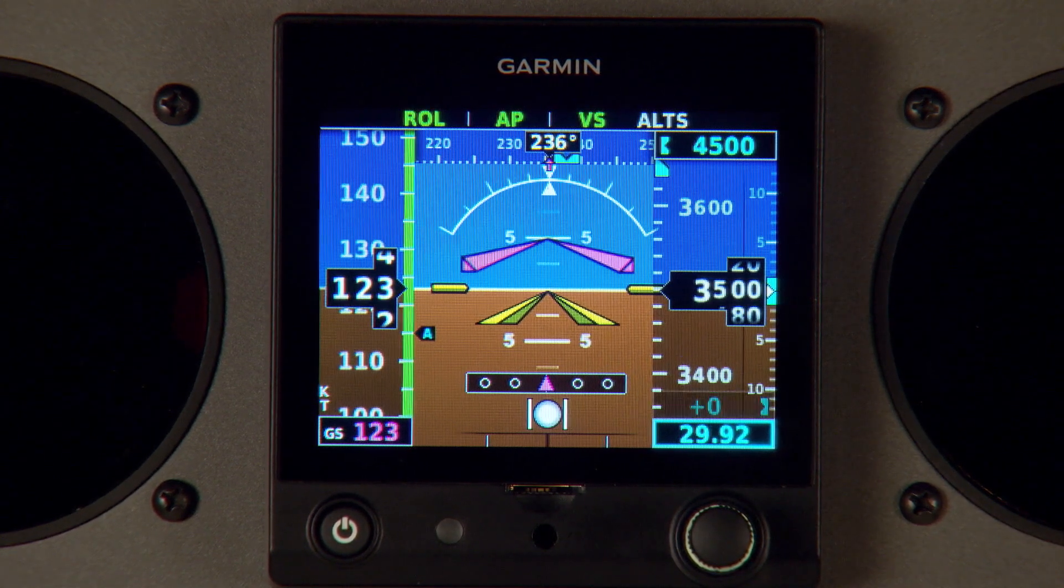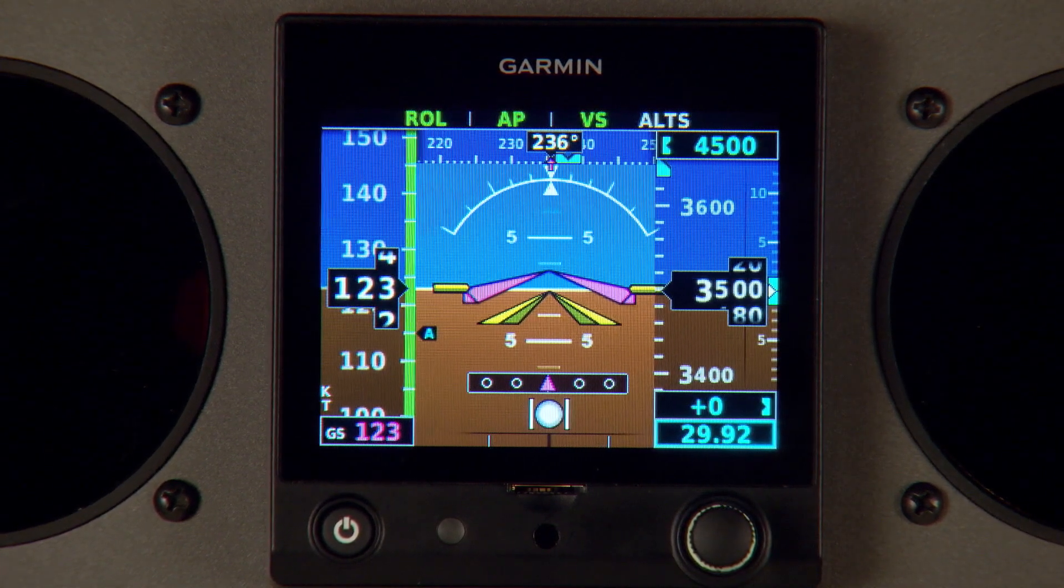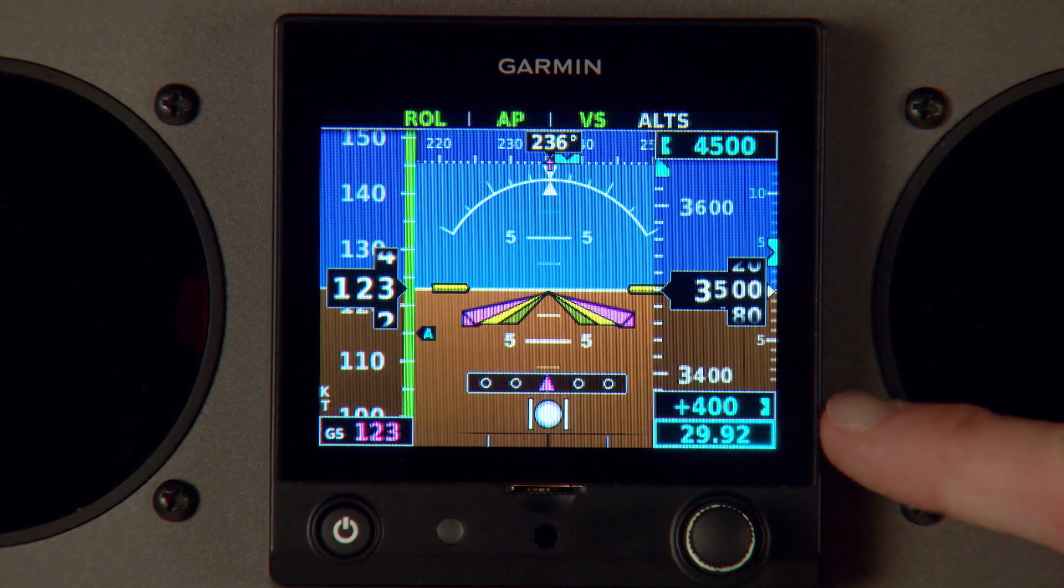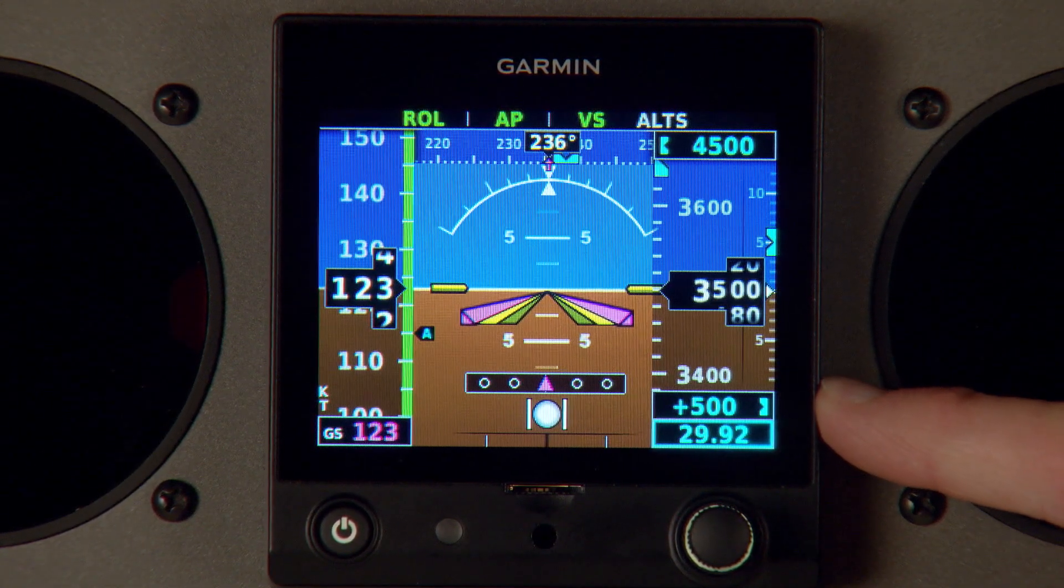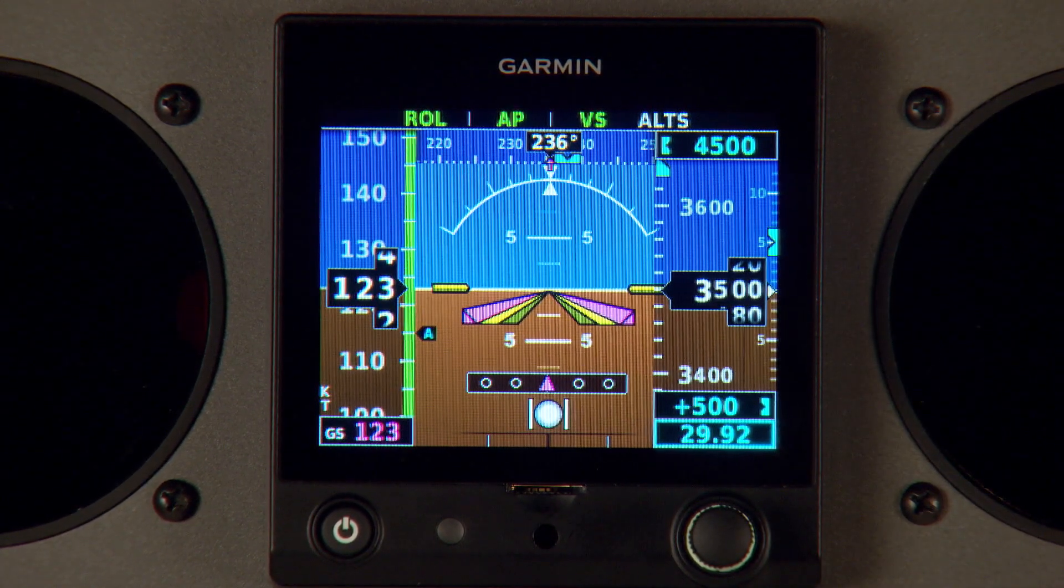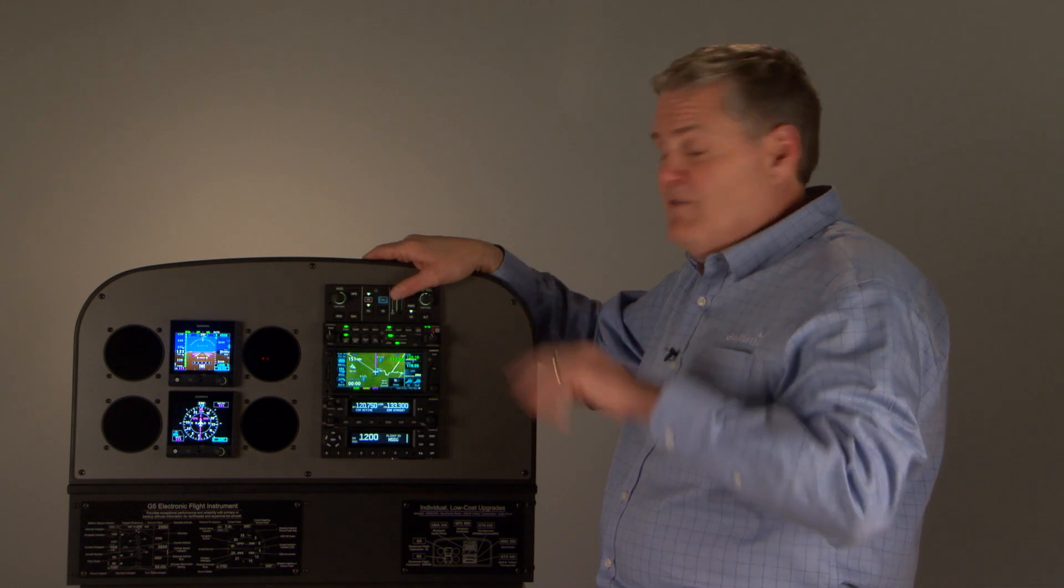I could also climb in a vertical speed mode. Again, I've got the little wheel on the controller. I pitch up on this and roll it up. Each click is 100 feet per minute and I'm now set to climb to 500 feet per minute and the airplane's going to climb at 500 feet per minute.